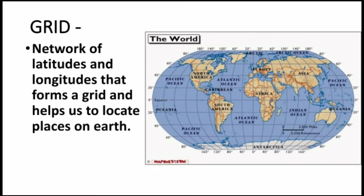Where the latitude and longitude lines cross each other on the grid, we get coordinates. This is the coordinate system of Earth, which allows us to locate any place. For example, a location can be described as 40 degrees north latitude and 74 degrees west longitude.